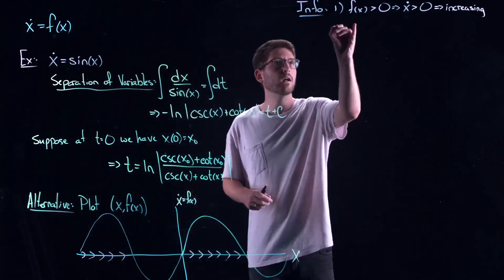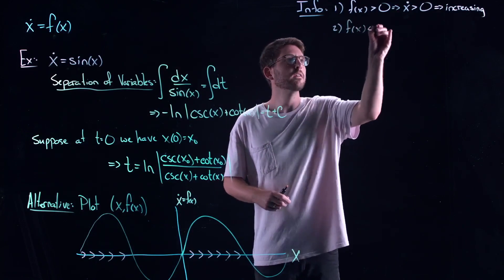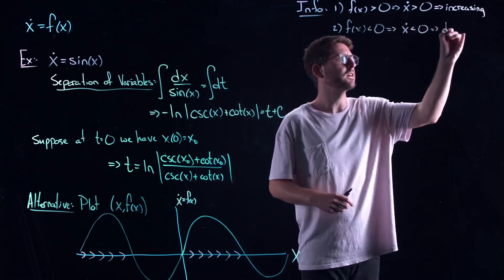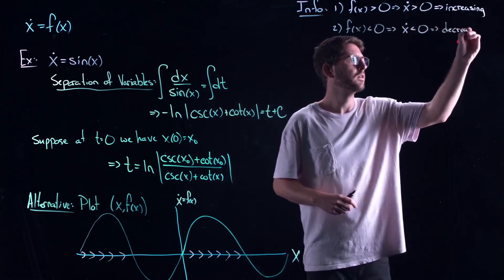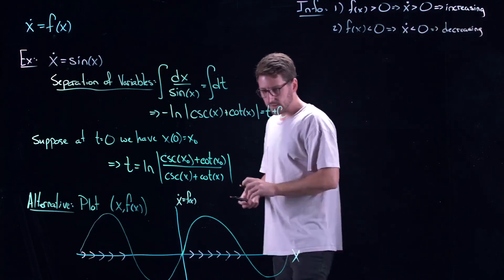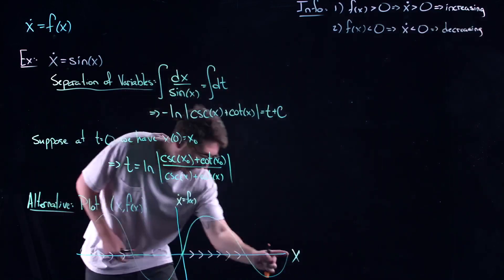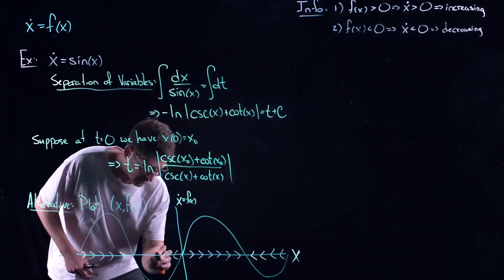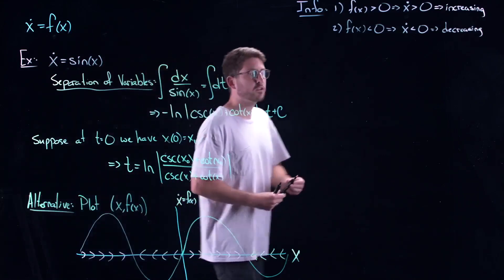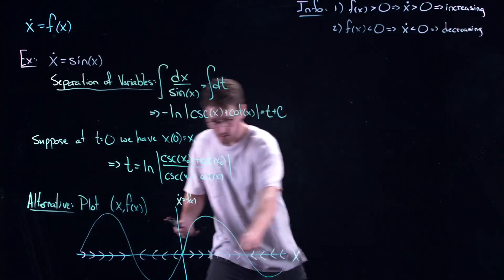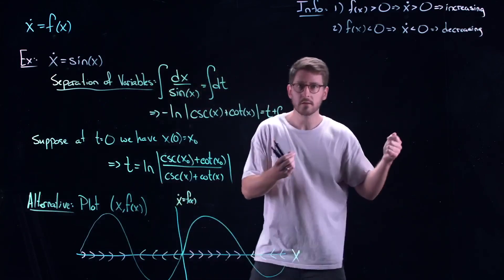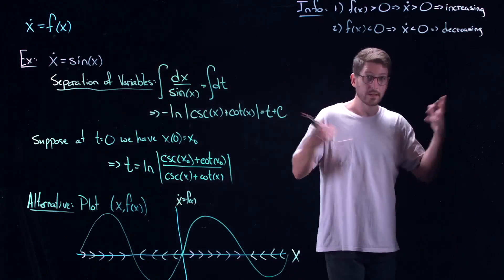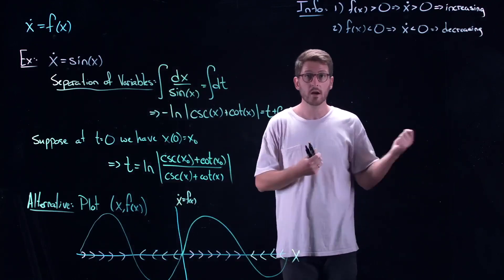Going the other direction: if f(x) is negative, then my derivative is negative, which tells me I'm decreasing — moving to the left on this line. Think of it this way: my values of x are stuck along this line. If I'm decreasing, I'm moving left; if I'm increasing, I'm moving right. That's it — I can only go left and right. There's nowhere else to go. I'm stuck on a line.